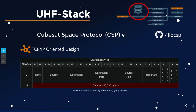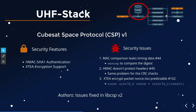The first space protocol in this stack is libCSP — the CubeSat Space Protocol, version 1. It's very TCP/IP-oriented: you have a source address, destination address, destination port, and source port so multiple applications on the satellite can receive telecommands. There are interesting bits like an HMAC flag and an XTea encryption flag that can be enabled. The protocol supports HMAC SHA-1 authentication and XTea encryption, which is a nice idea, but there are some issues.